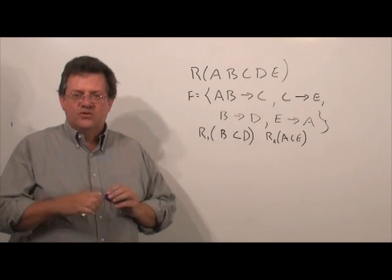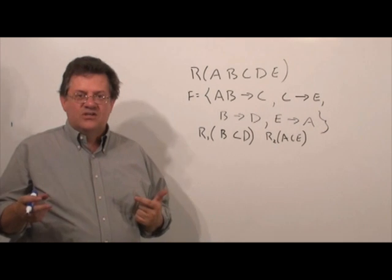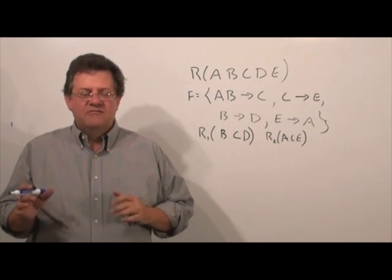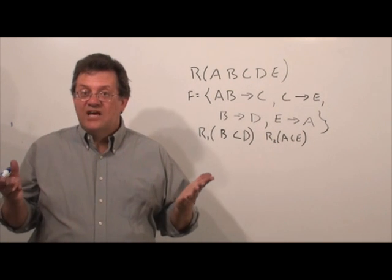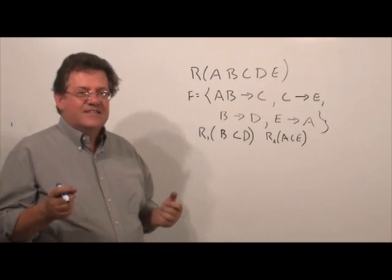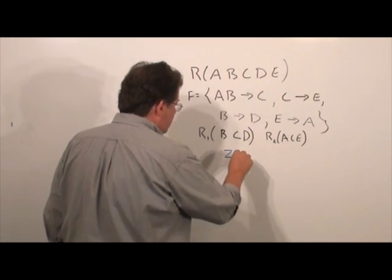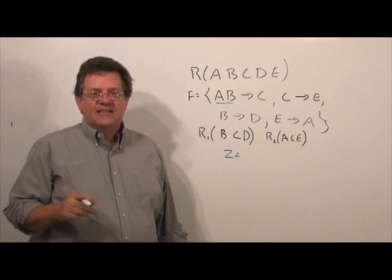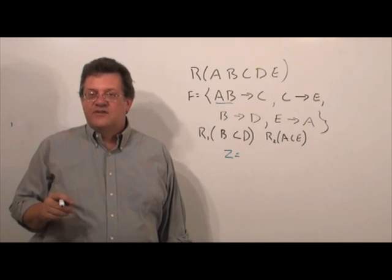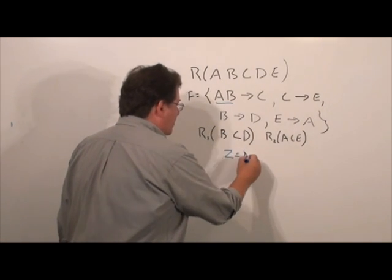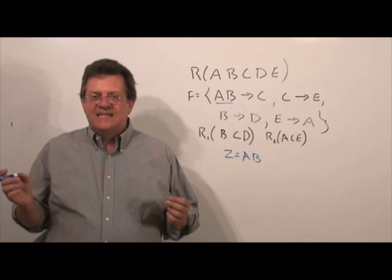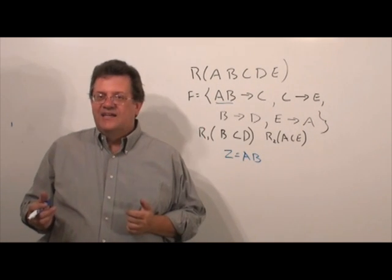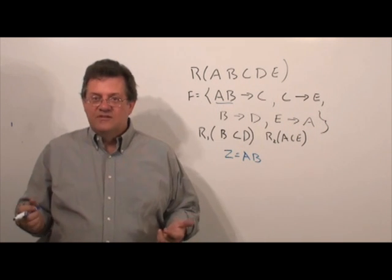Well, here's what we're going to do to determine whether or not the functional dependencies are preserved. Now, it's important that all the functional dependencies must be preserved. If one is not preserved, forget about it. We say the functional dependencies are not preserved. So, everyone must be preserved. Let's take a look. We're going to work with this variable, work variable called Z, and we set it equal to, in this case, the left-hand side of the first functional dependency we're going to look at. So, Z is equal to AB. And the idea is to keep adding attributes to Z, and we keep repeating this process until eventually we get the right-hand side, in this case, C. If we don't get the C, then it's not preserved.